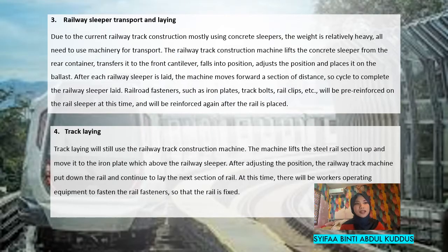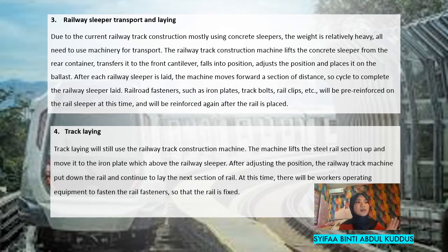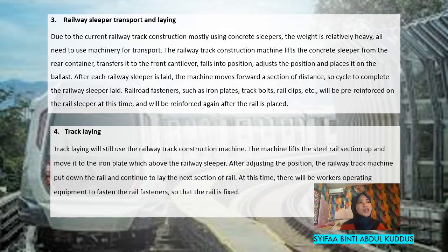The third step is railway sleeper transport and laying. Due to current railway track construction mostly using concrete sleepers, which are relatively heavy, machinery is required for transport. The railway track construction machine lifts the concrete sleeper from the rear container, transfers it to the front cantilever, drops it into position, adjusts the position, and places it on the ballast. After each sleeper is laid, the machine moves forward. Railroad fasteners such as iron plates, track bolts, rail clips, etc. will be pre-reinforced on the sleeper at this time and reinforced again after the rail is placed.